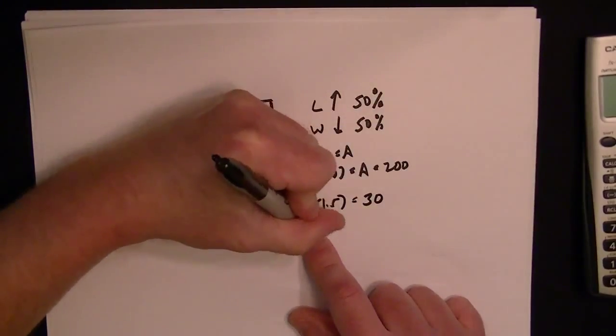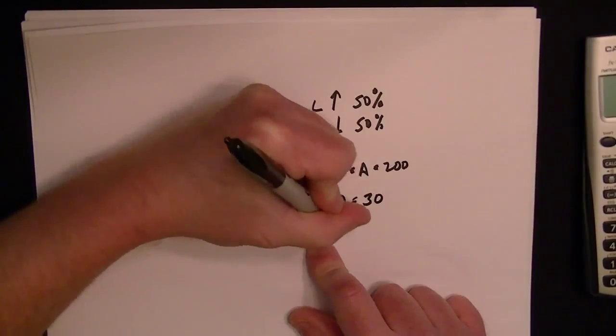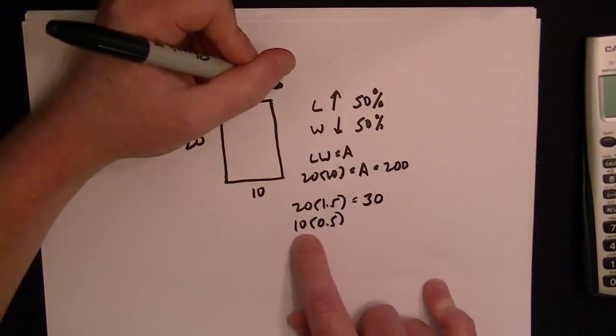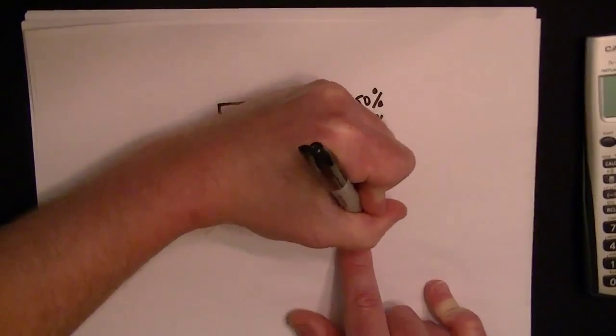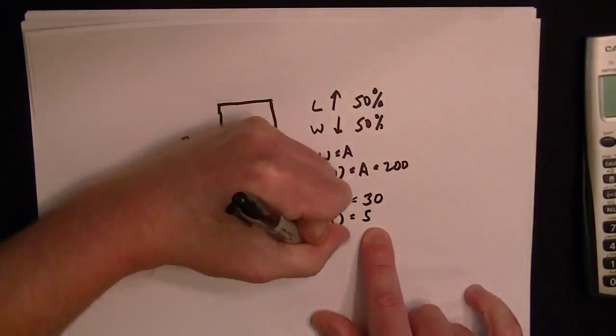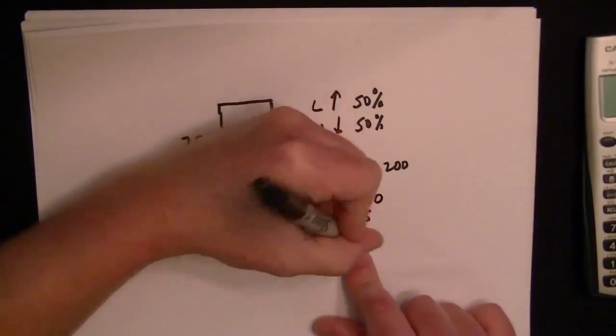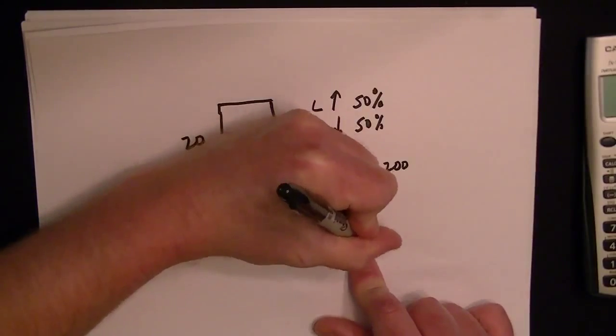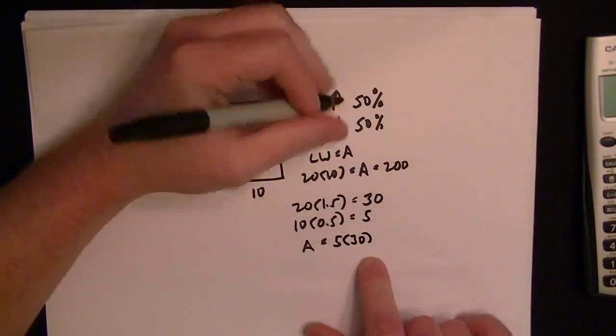And now if the width decreases by 50%, we've got 10 multiplied by 0.5, which equals 5. So the new area is going to be 5 times 30 - this is the new width and length.